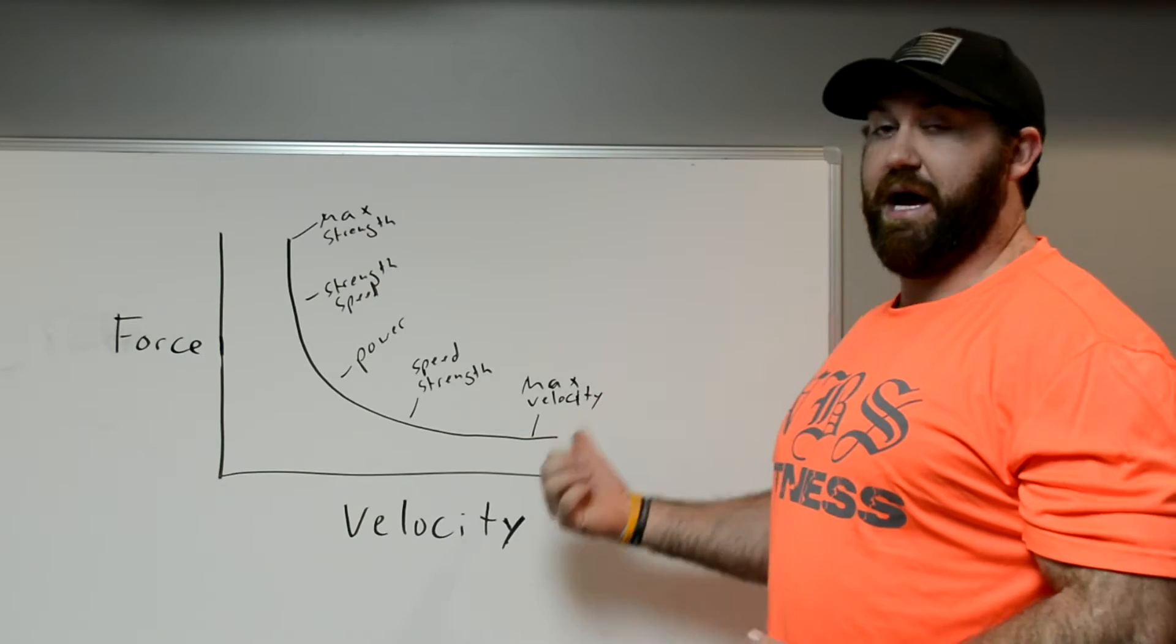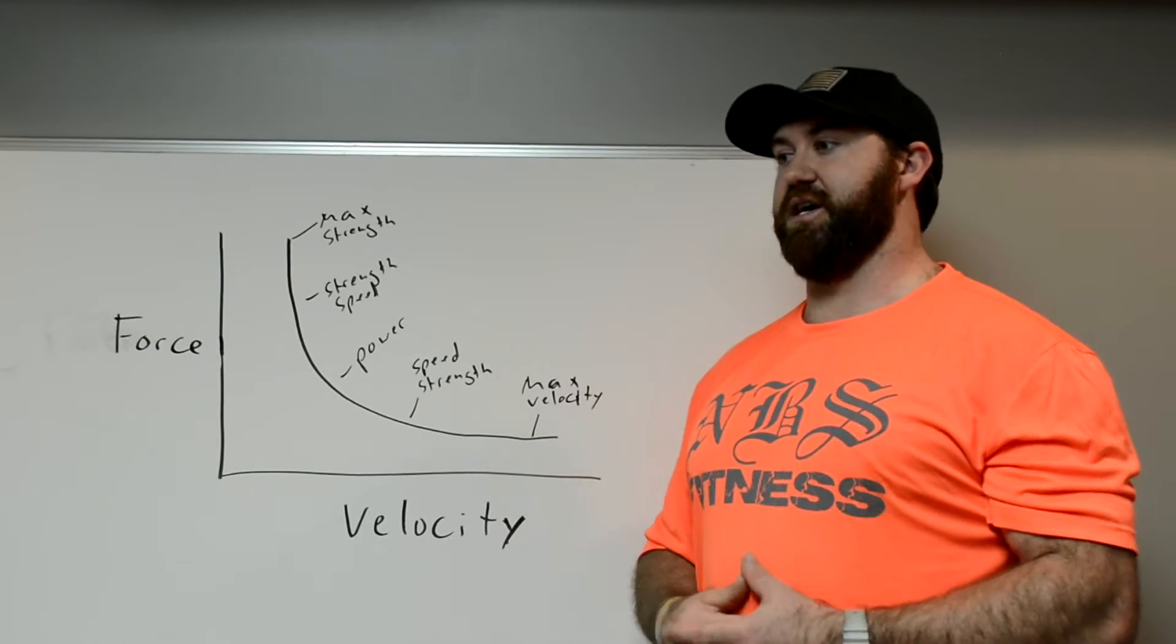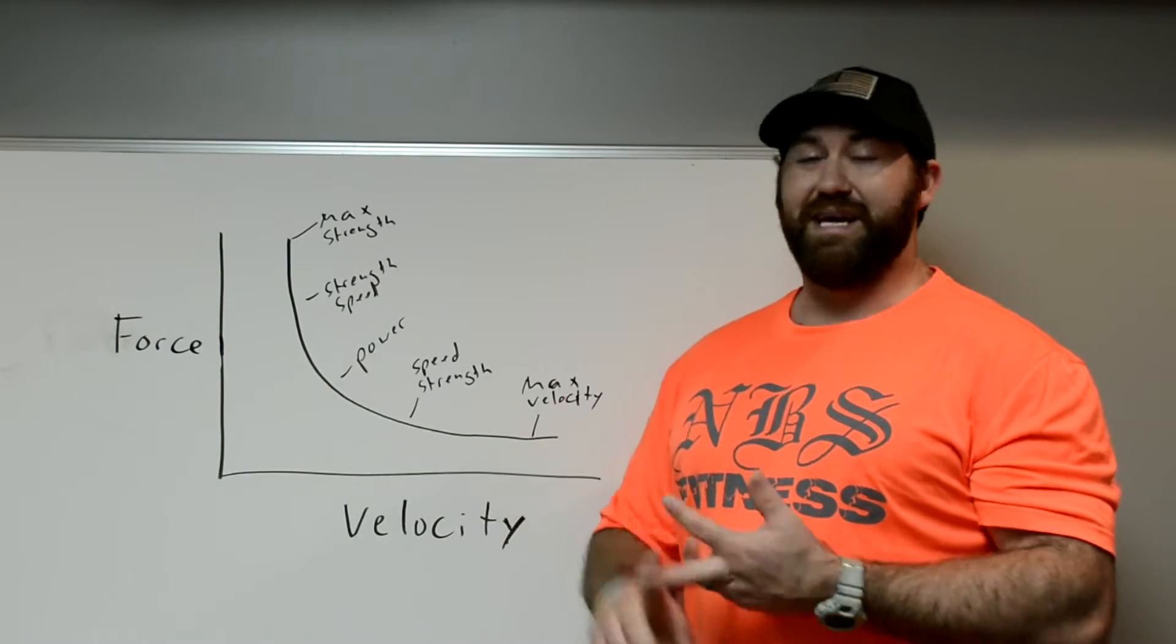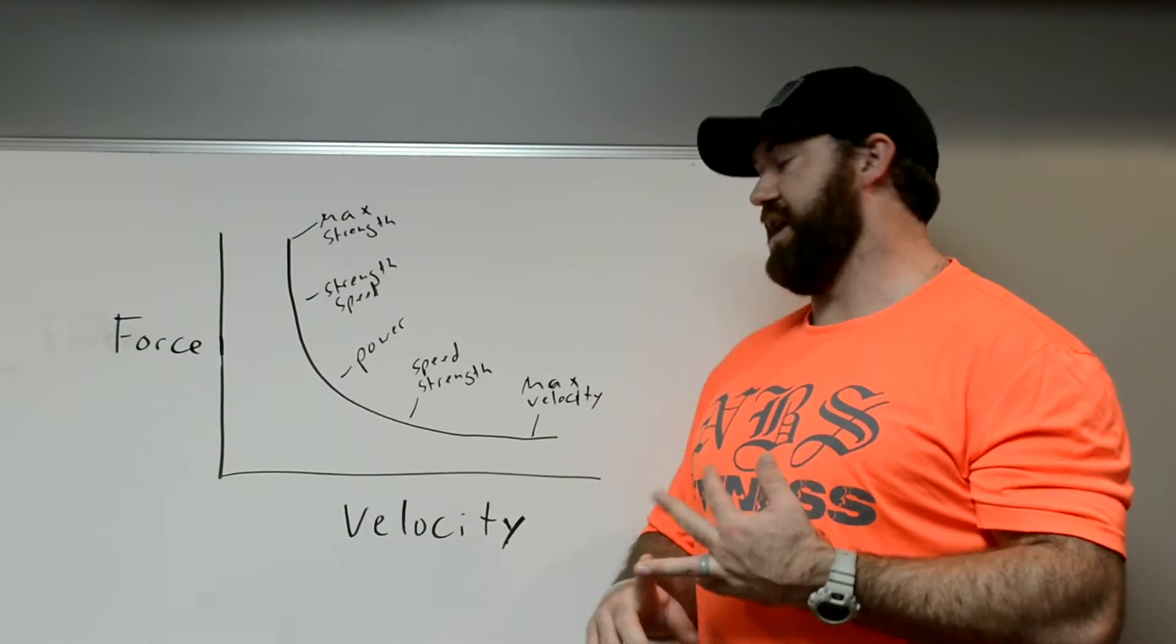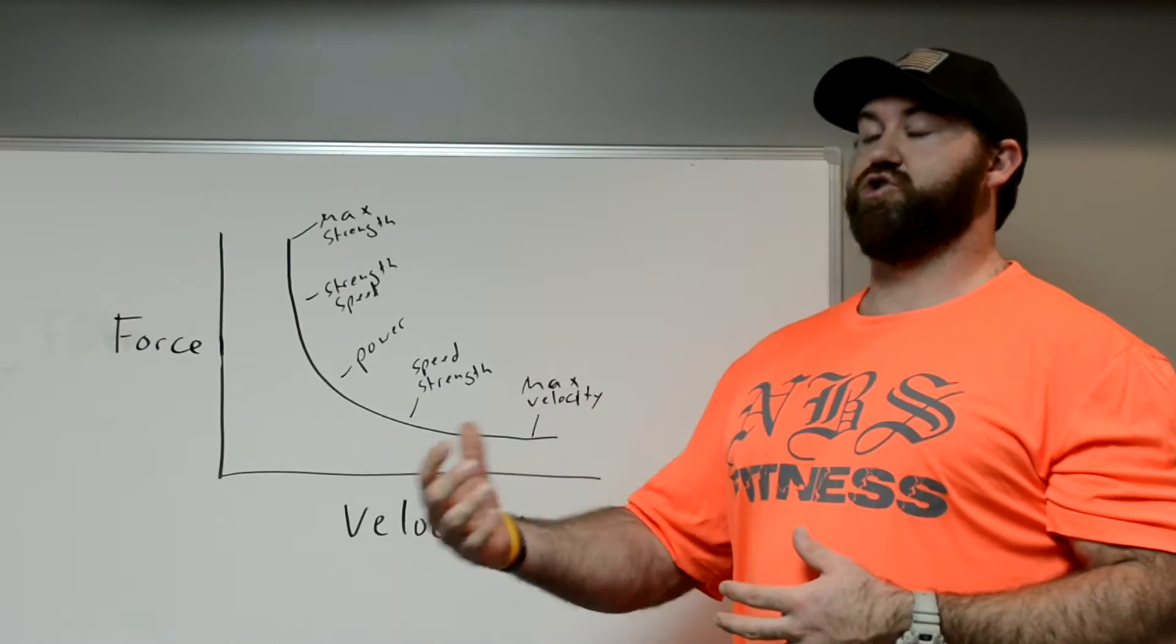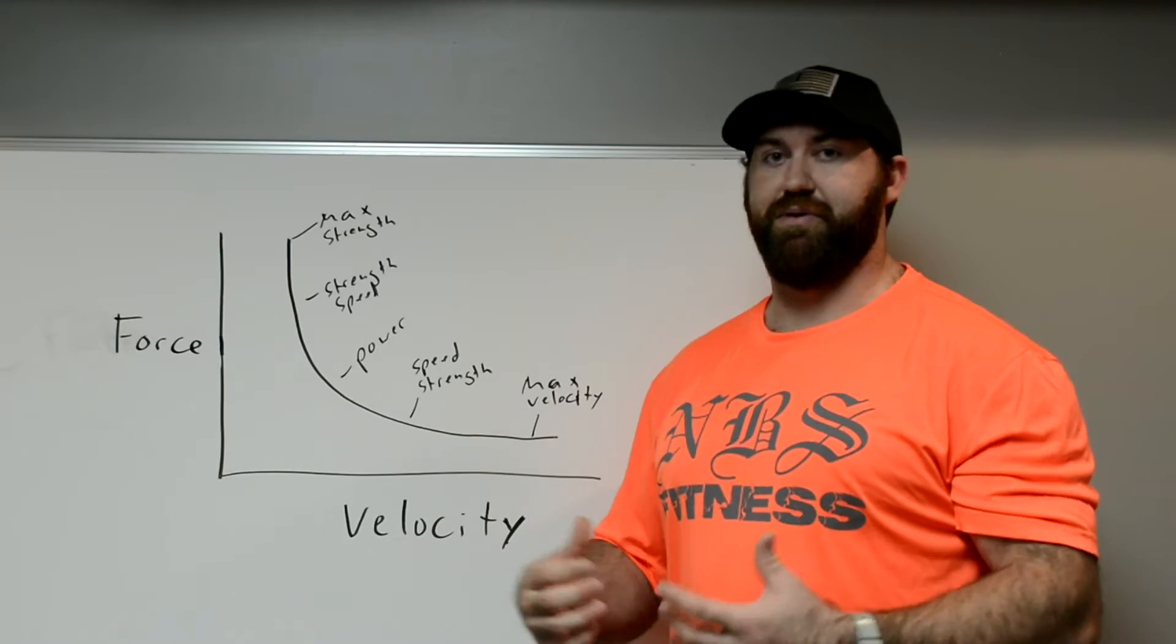On the opposite end we see max velocity. This would be things like swinging a golf club, swinging a tennis racket, sprinting a 100 meter dash. It's your ability to shorten and extend the muscle as fast as possible.